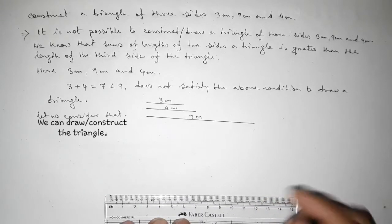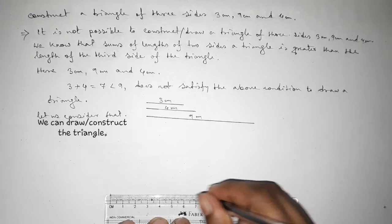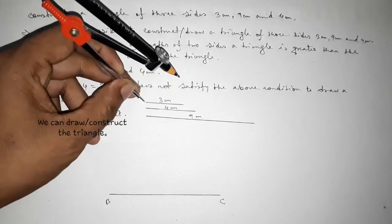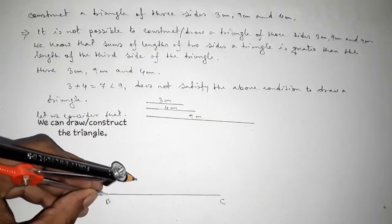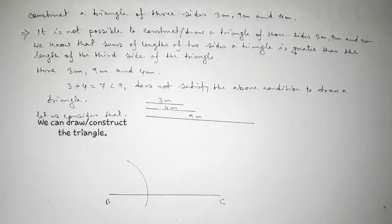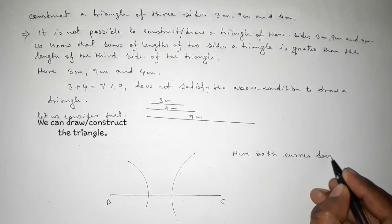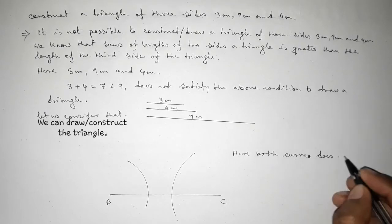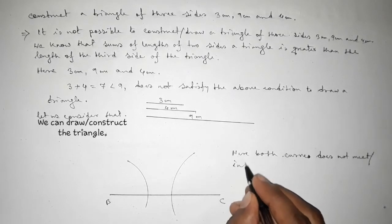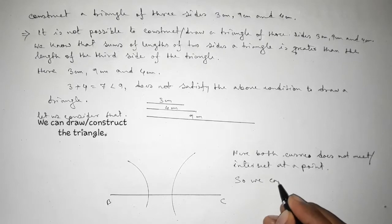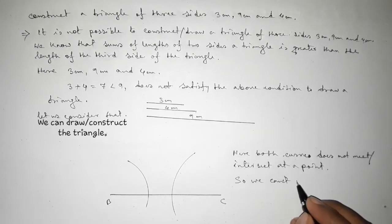We draw a line of length nine centimeter, marking point B and point C. Taking the length three centimeter using a compass and drawing an arc from one end. Then taking the length four centimeter and drawing an arc from the other end. We can see that both arcs do not meet or intersect at a point, confirming we cannot construct a triangle with these three sides.